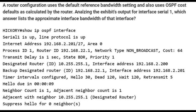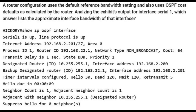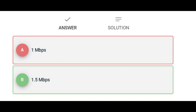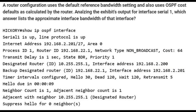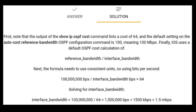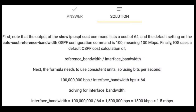I'm still a bit afraid of this kind of situation if I meet it on the real CCNA exam. The question is: which answer gives the approximate interface bandwidth of that interface? The answer is 1.5 Mbps. The solution states: note that the output of the 'show IP OSPF interface' command lists a cost of 64, and the default setting on the auto-cost reference bandwidth OSPF configuration command is 100, meaning 100 Mbps. iOS uses a default OSPF cost calculation of: reference bandwidth divided by interface bandwidth — using bits per second — and that is how they get the answer of 1.5 Mbps.